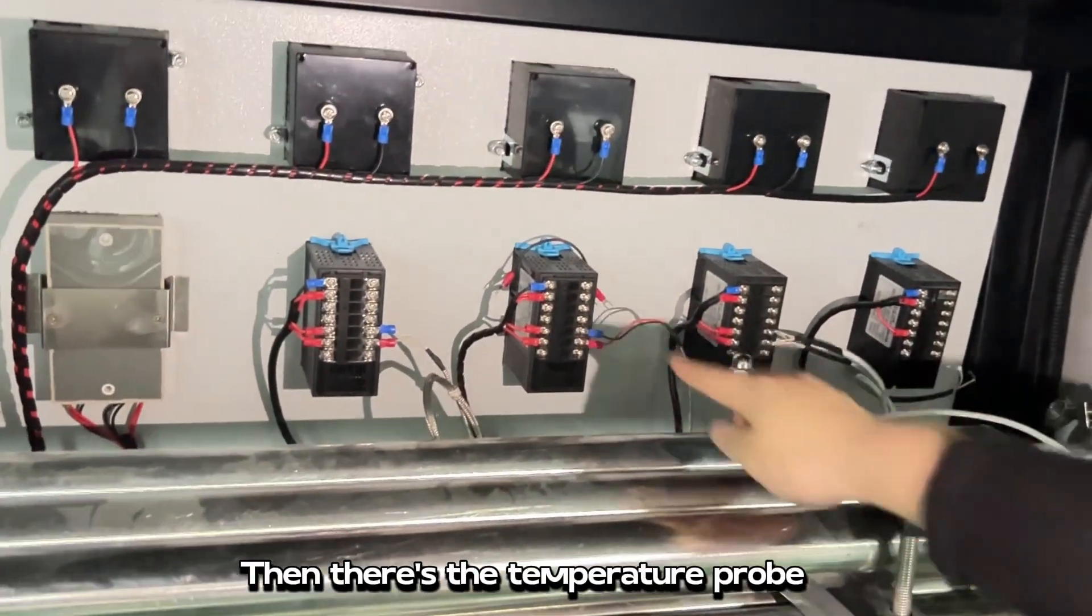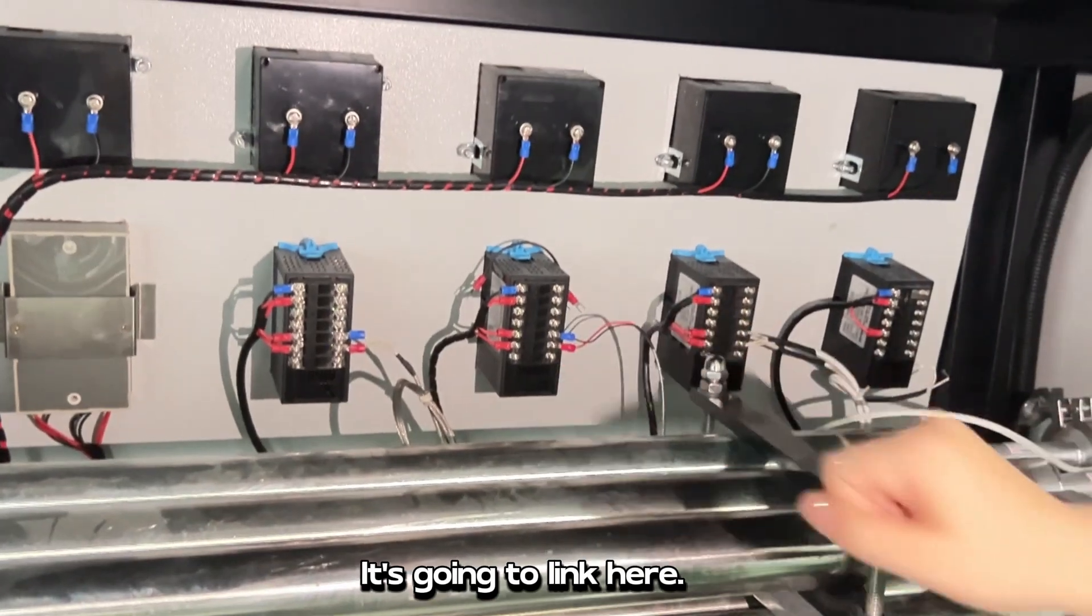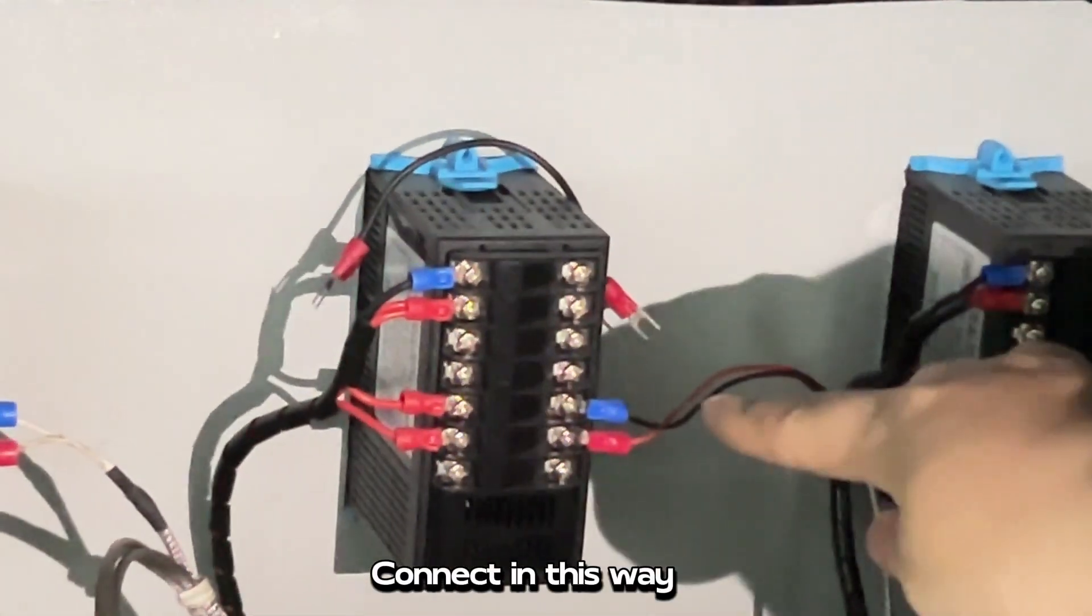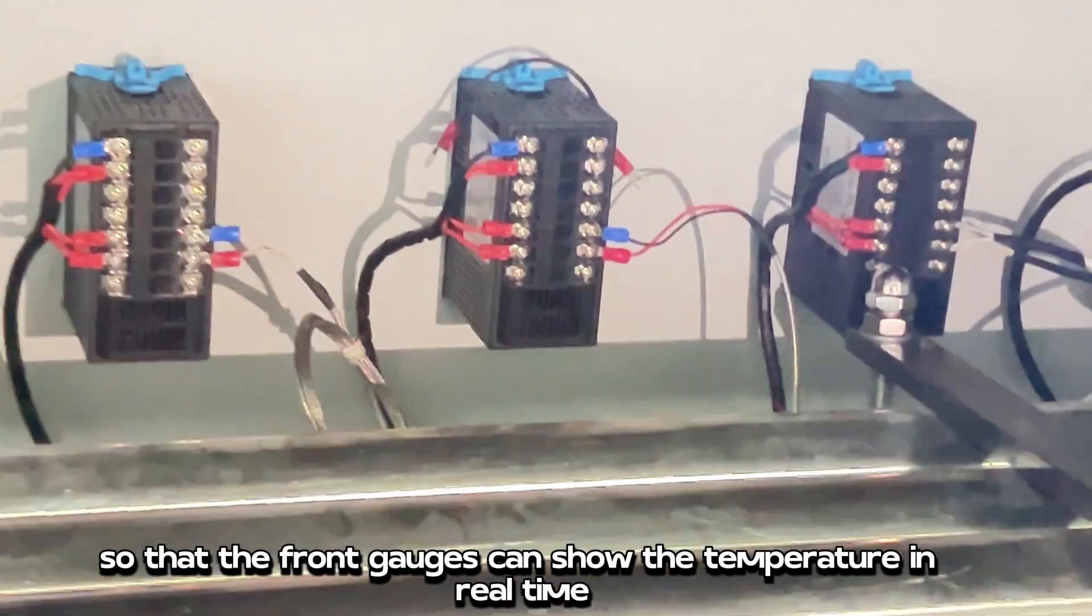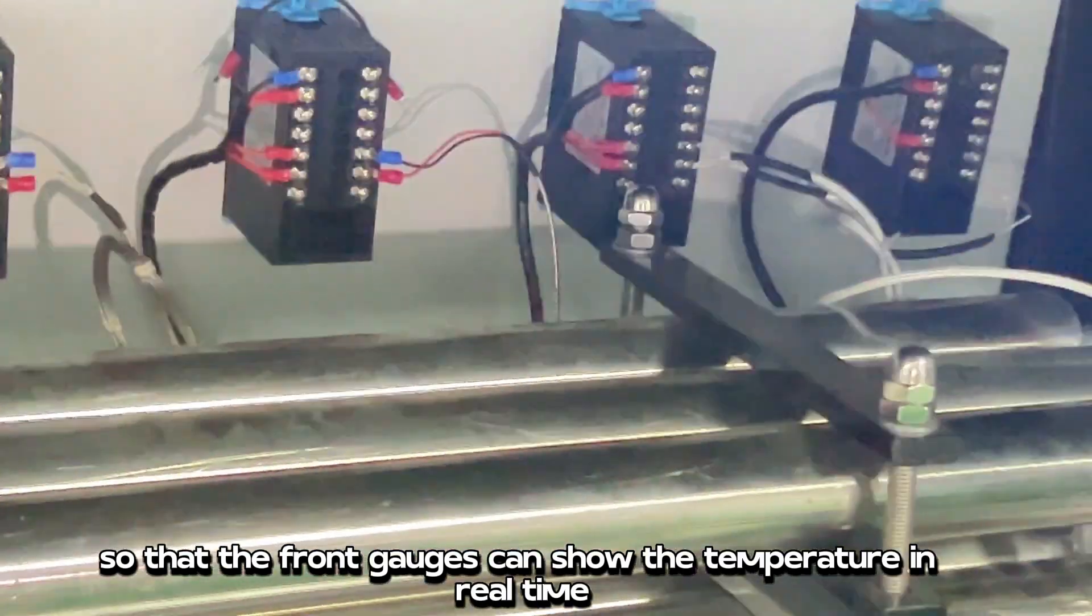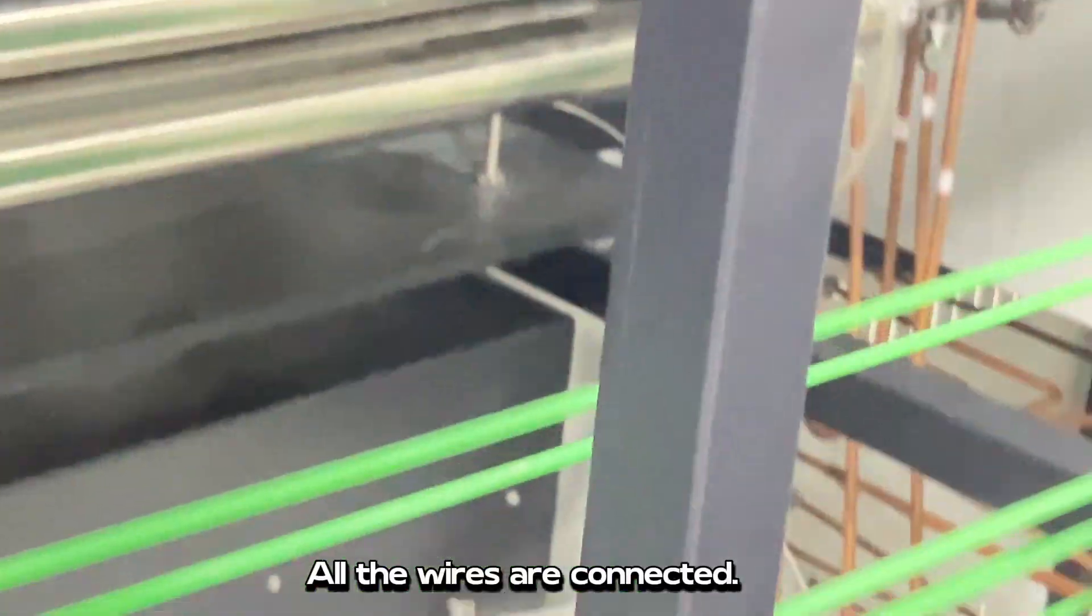Then there's the temperature probe. It's going to link here. Connect in this way, so that the front gauges can show the temperature in real time. All the wires are connected.